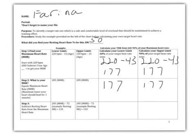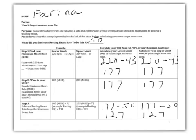From there, you want to subtract your resting heart rate on step 3. So I take 177 and I subtract my resting heart rate, which is 50, and that leaves me with 127. Those calculations would also be the same on your 90% upper limit — I take the same numbers, 177, subtract my resting heart rate, and I get 127 from there.